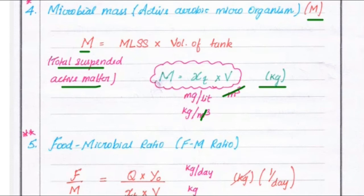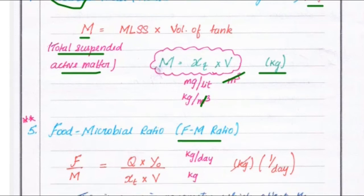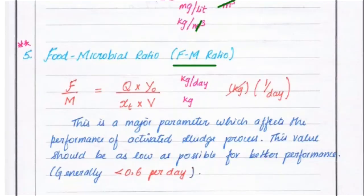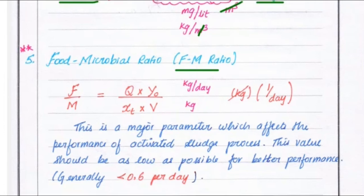Next is the food-to-microbial ratio, the F/M ratio. F/M equals Q into Y-naught divided by XT into V. This gives kg per day divided by kg, so the unit is 1 per day. This is the major parameter which affects the performance of the activated sludge process. This value should be as low as possible for better performance. Generally, the food-to-microbial ratio is less than 0.6 per day.